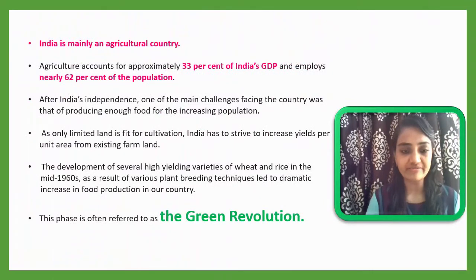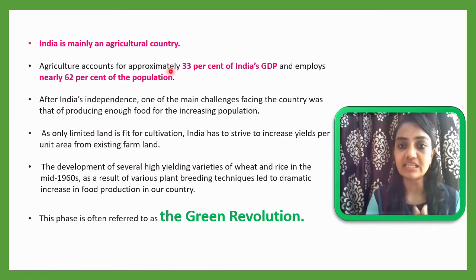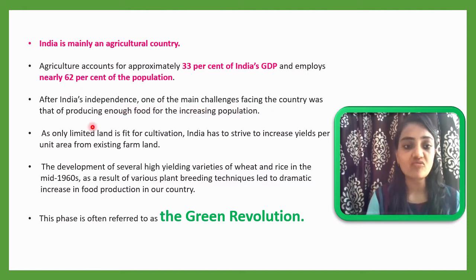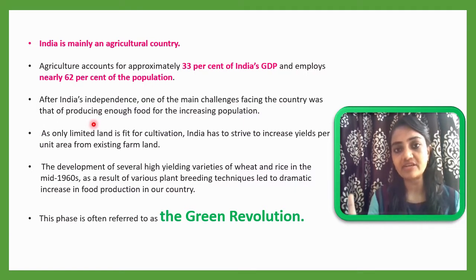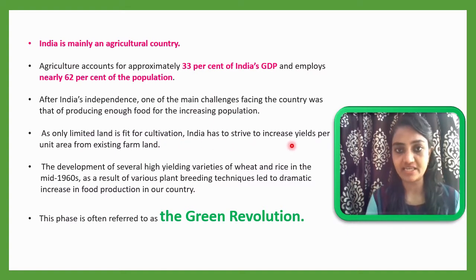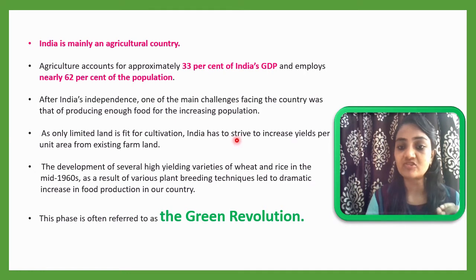India is mainly an agricultural country. Agriculture accounts for approximately 33 percent of India's GDP and employs nearly 62 percent of the population. One of the main challenges after India's independence was producing enough food for the increasing population. As only limited land is fit for cultivation, India has to try to increase yield per unit area from existing farmlands.